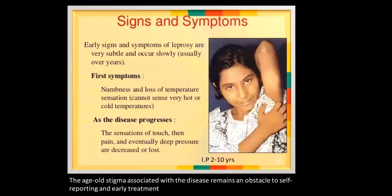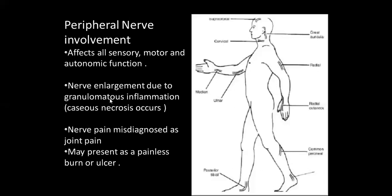Clinical features — early signs are very subtle and slow, usually over years: numbness and loss of temperature sensation; the patient cannot sense very hot or very cold temperatures. As the disease progresses, sensations of touch, then pain, and eventually deep pressure are decreased or lost. The incubation period is two to ten years, so the patient may not remember when they were initially infected. Many peripheral nerves are involved, affecting all sensory, motor, and autonomic functions. Nerve enlargement due to granulomatous inflammation; caseous necrosis occurs.